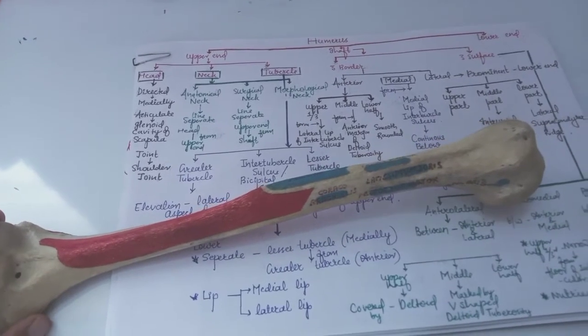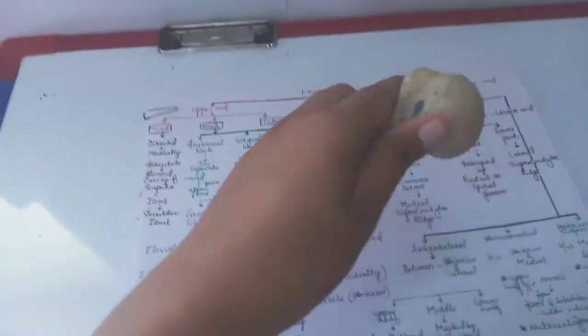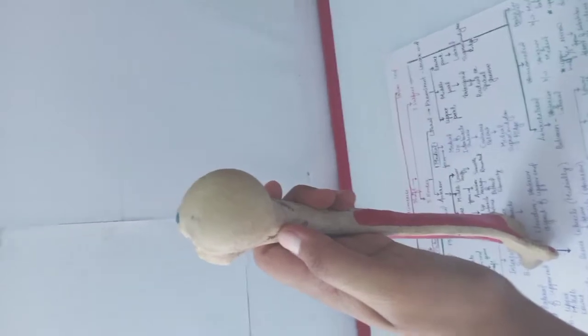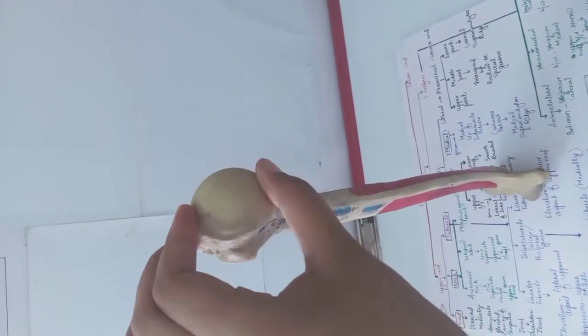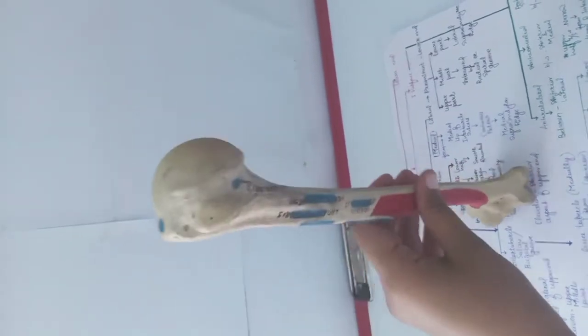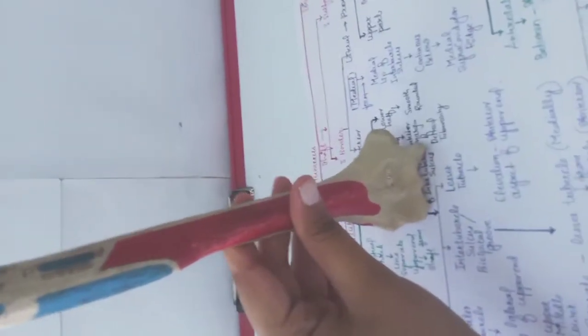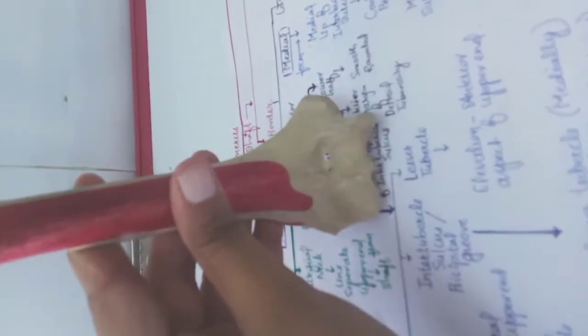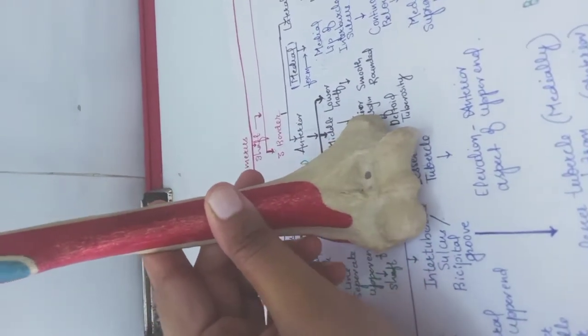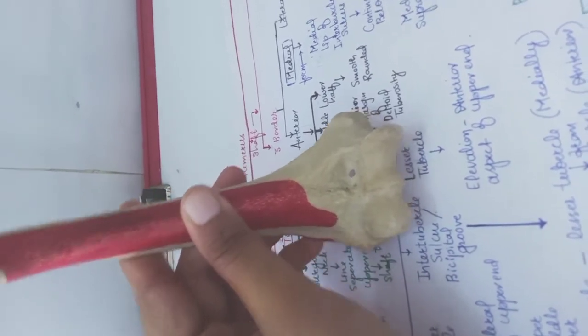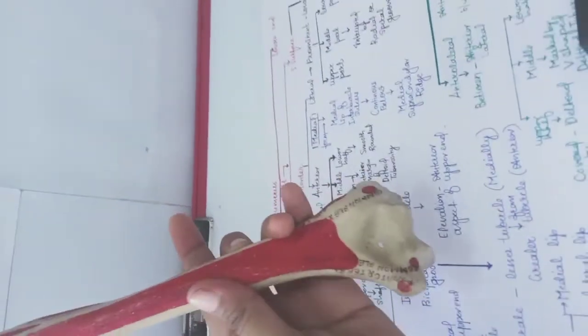The upper end is rounded and it forms the head of the humerus. Then the lower end of the humerus is expanded side to side and it is flattened from before backward.